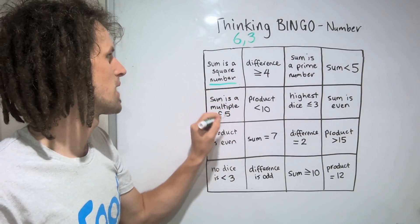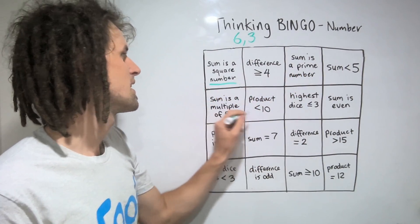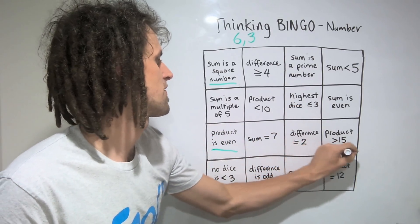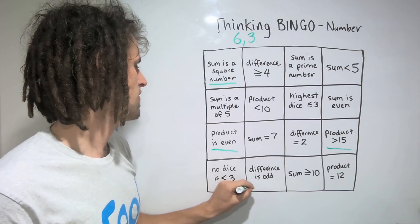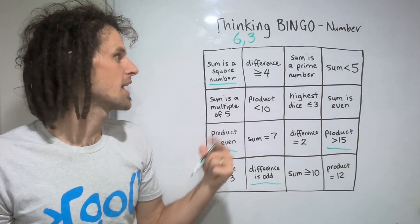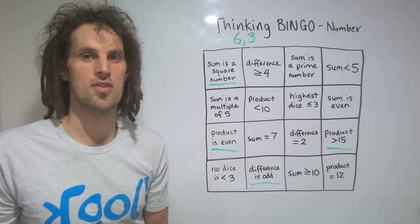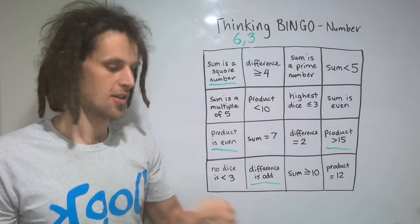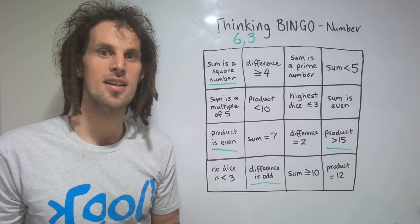Yes, the sum is a square number. No, difference not 4. Sum is not a prime number. The product is even. Product is above 15 and difference is odd. So out of these 4 statements, players get to choose 1 to cross out. This means a whole lot more fluency work is getting done than just identifying the 1 number to cross out.